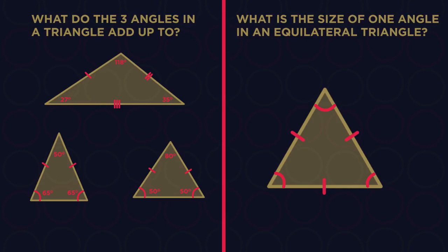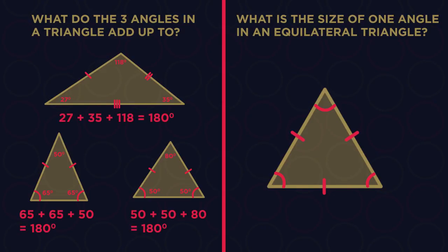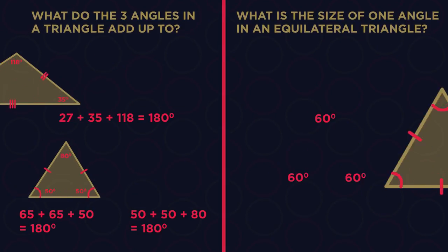If you didn't already know, the three angles always add up to 180 degrees. And because an equilateral triangle has three equal angles, each angle must also always be 60 degrees.